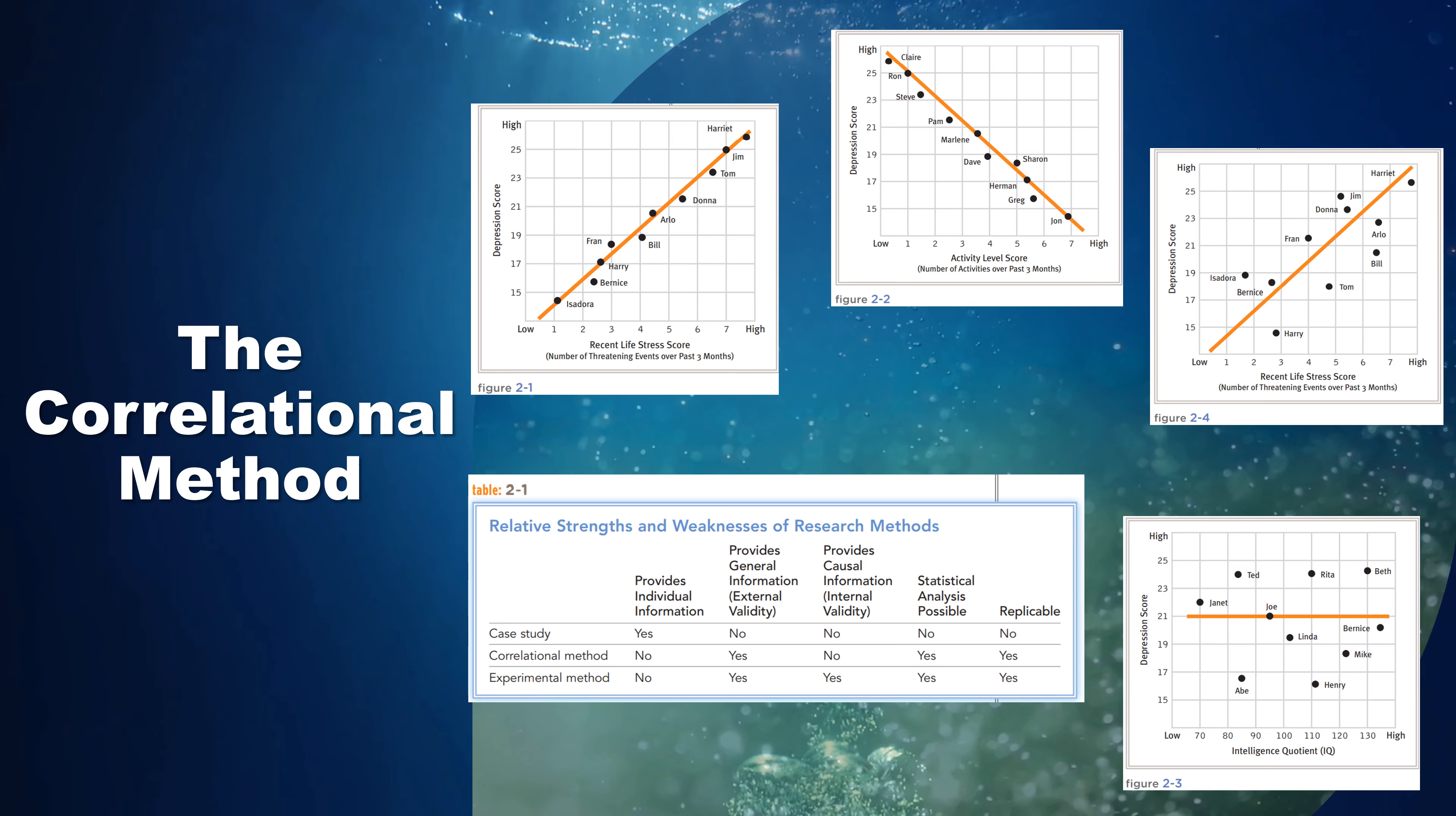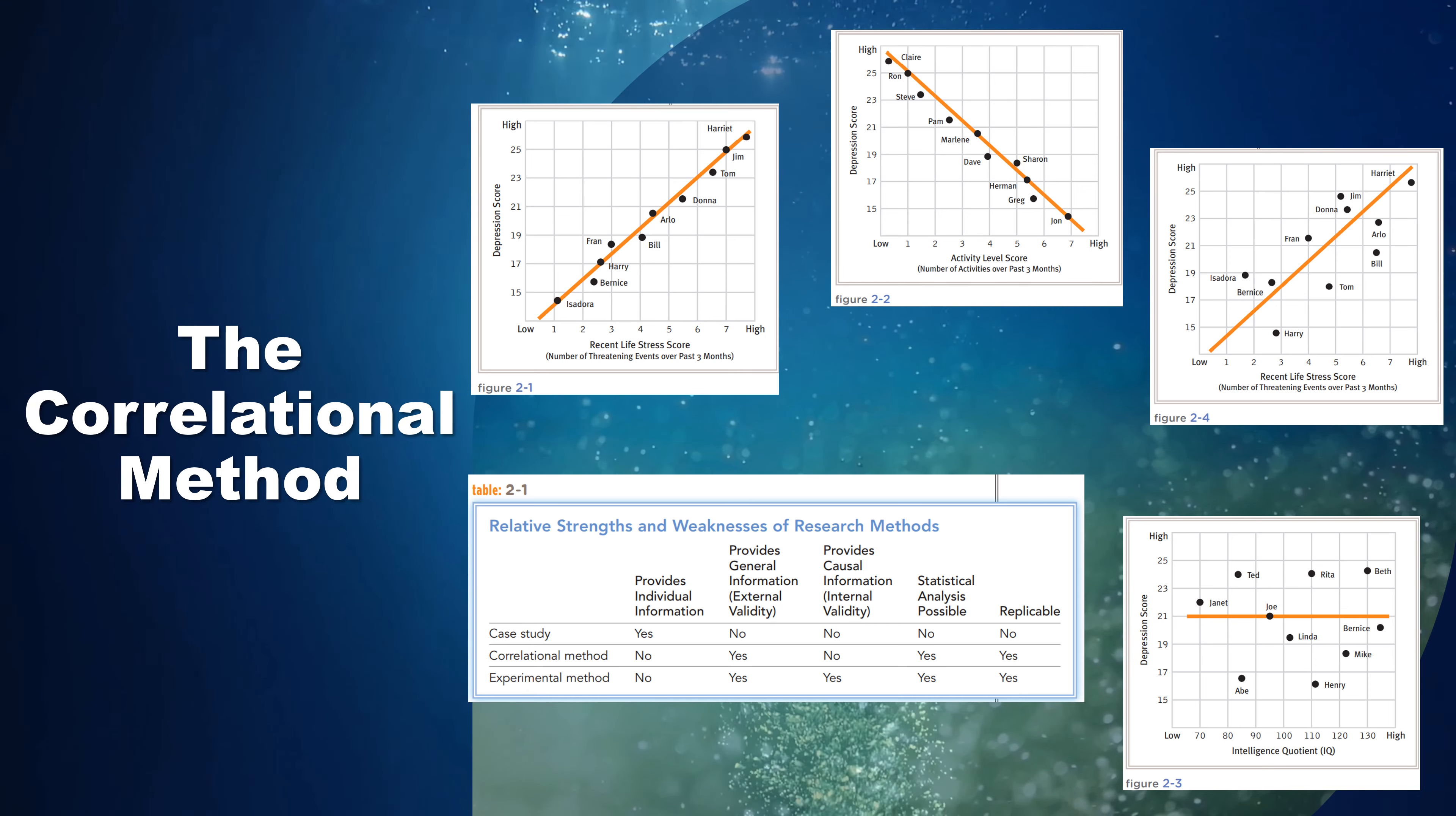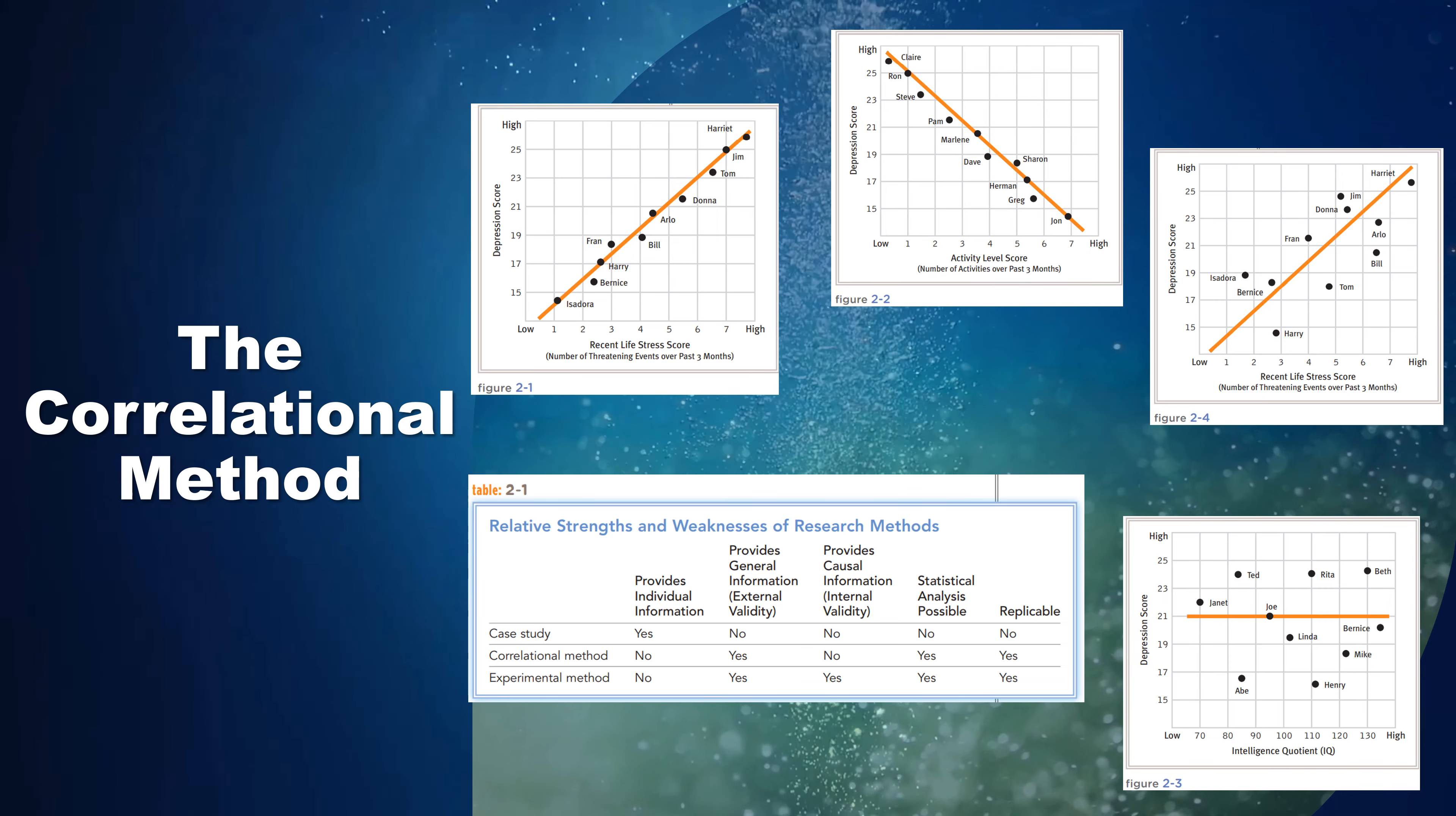Because longitudinal studies report the order of events, their correlations provide clues about which events are more likely to be causes and which are more likely to be consequences. Certainly, for example, the children's problems did not cause their parents' schizophrenia.